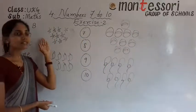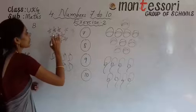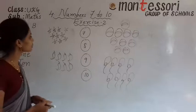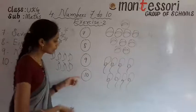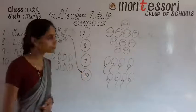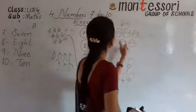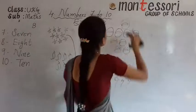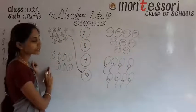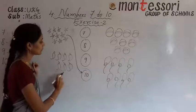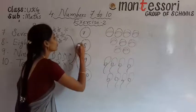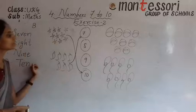See, how many stars are there? 1, 2, 3, 4, 5, 6, 7, 8, 9, 10. There are 10 stars. So where is the number 10? Here. You have to match the 10 stars to the particular number 10. Next, mangoes. How many mangoes are there? 1, 2, 3, 4, 5, 6, 7. There are 7 mangoes. So you have to match to the particular number 7.